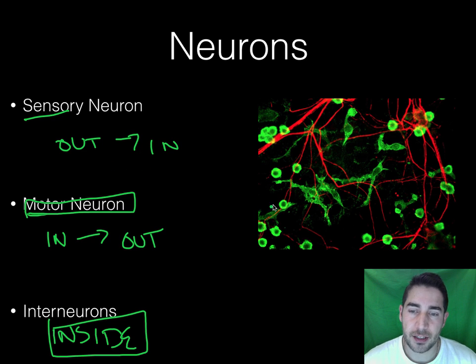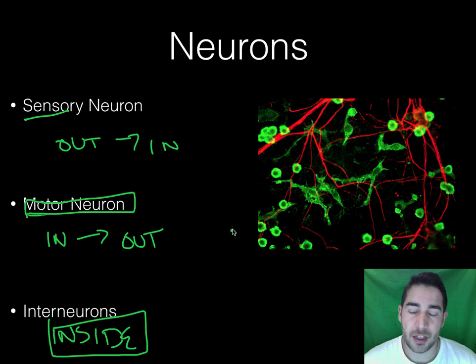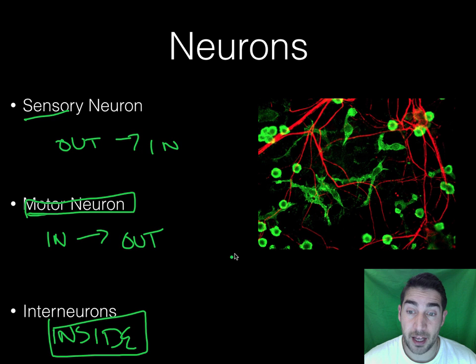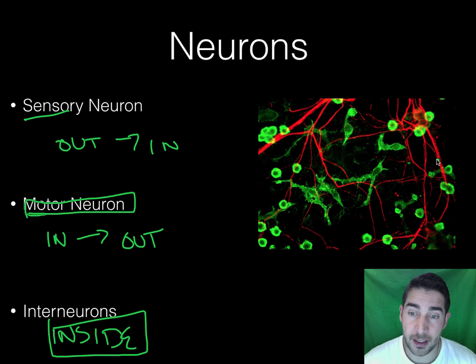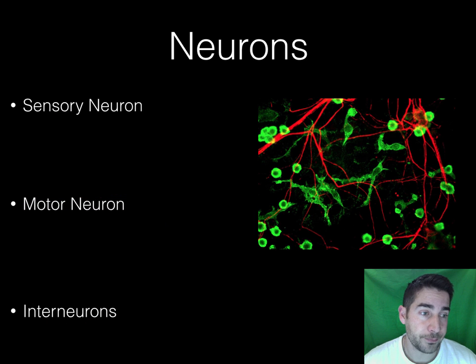This is a high-magnification microscopic view of neurons in action — it's pretty cool. You can see the cell body right here and the axon right there. We're going to take a look at that right now.